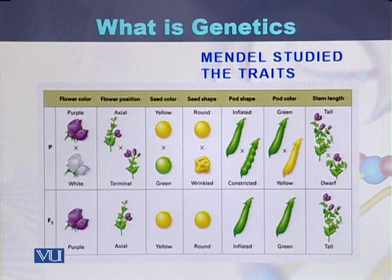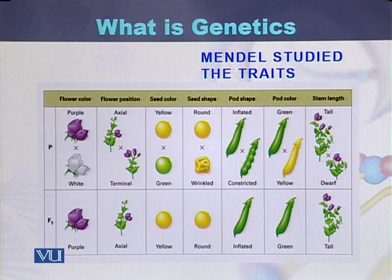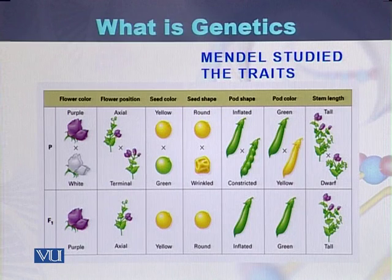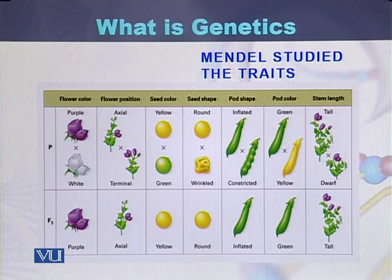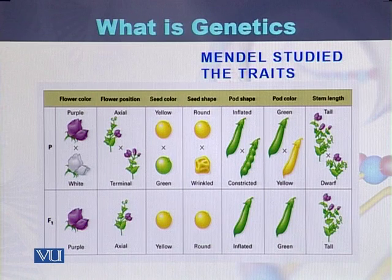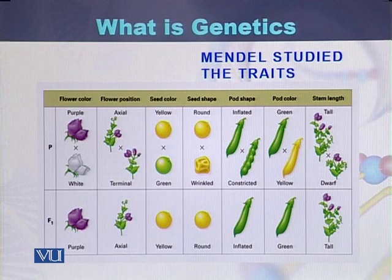Here is the list of characteristics of garden pea. Flower color was purple and white. Flower position was axial and terminal. Seed color was yellow and green. The shape of the seed was round and wrinkled. Pod shape was inflated and constricted. Pod color was green and yellow. And plant height was tall or short. These were all the characteristics present in the garden pea.